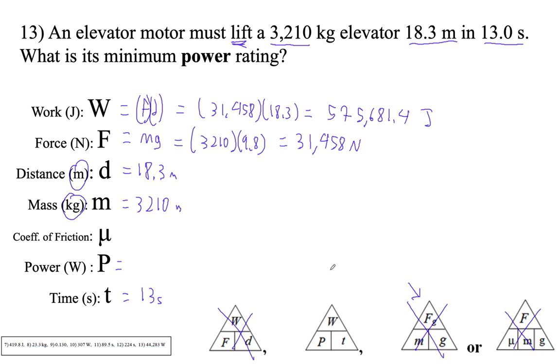And we just did that one. So it must be that we're going to do this formula. And indeed, we now know the work and the time. So power is work divided by time. We just figured out the work is 575,681.4. And we know the time is 13 seconds. So literally, I don't type that number in again. I just literally just go divided by 13, enter.